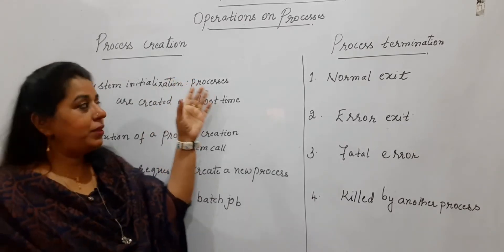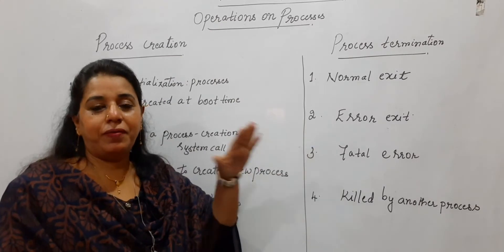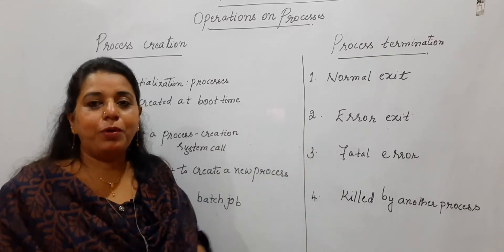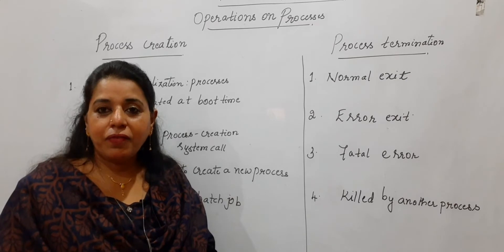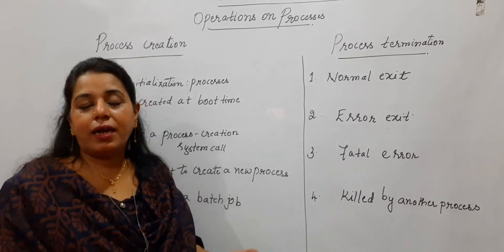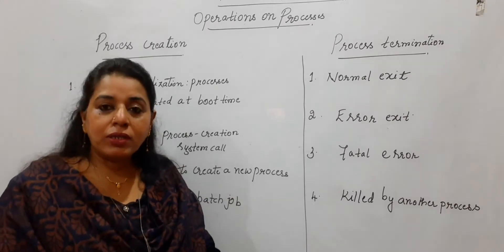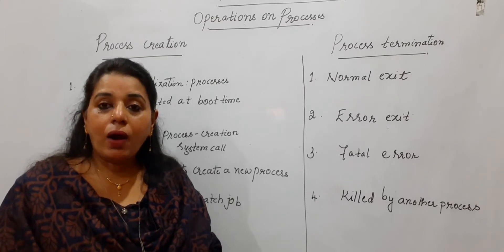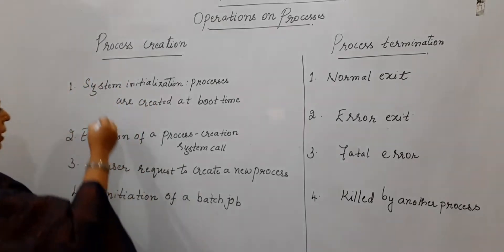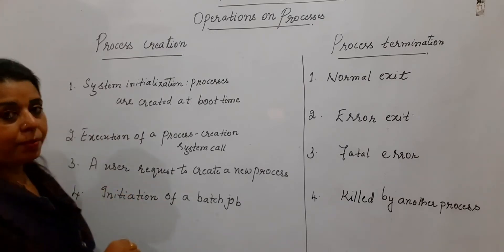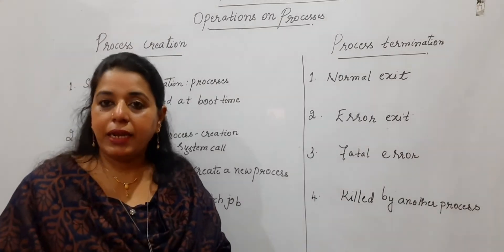The first operation is process creation. In the previous videos, you all have come to know the concept of a process. So which are the different events that are making a process get created? We say process creation has happened, but how does the process get created? These four major events lead to different processes being created in the system.